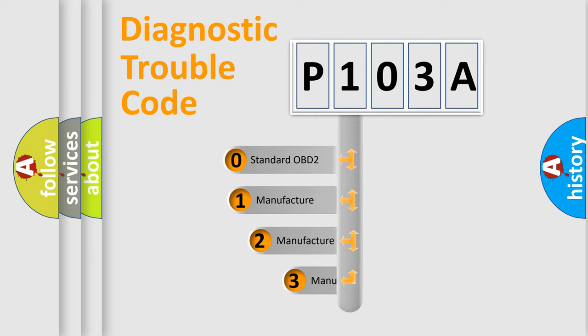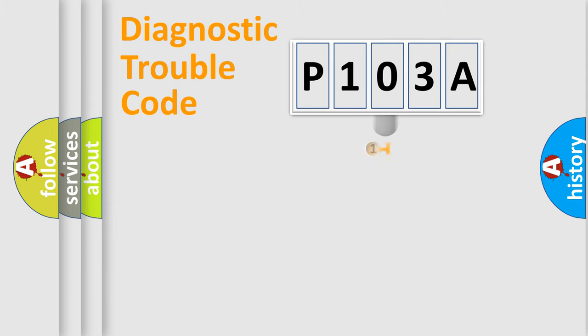If the second character is expressed as zero, it is a standardized error. In the case of numbers 1, 2, 3, it is a more precise expression of the car-specific error.